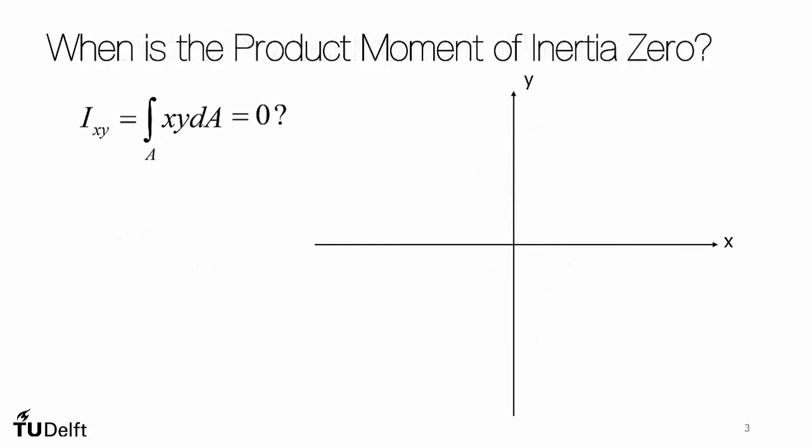The product moment of inertia is zero when the summations actually sum to zero. And you have to look at the multiplication of the x and y-coordinates here because the areas, dA, are always positive.